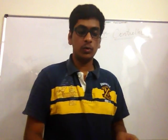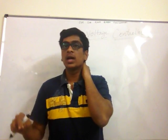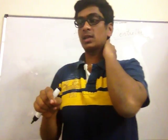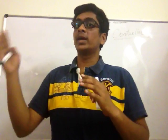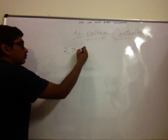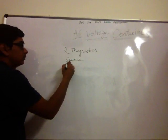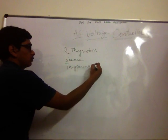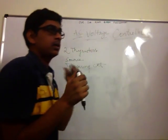We have been using thyristors and diodes for quite a long time. AC voltage controlling can be done using thyristors, triacs, or even some diodes. In our case, let us use thyristors. For a full complete conversion, let us deal with the single-phase full-controlled AC voltage converter. We'll be needing two thyristors, a source, and triggering circuits for both thyristors.